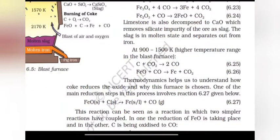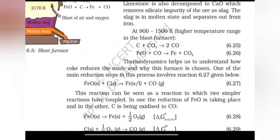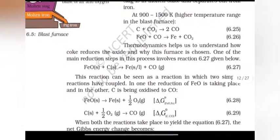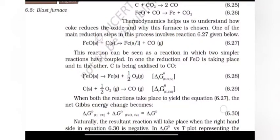At 900 to 1500 Kelvin, CaCO3 gives CaO plus CO2. FeO plus CO gives Fe plus CO2. Thermodynamics help us understand how coke reduces the oxide and why this furnace is chosen. One of the main reduction steps in the process involves the reaction: FeO plus CO gives Fe plus CO2.